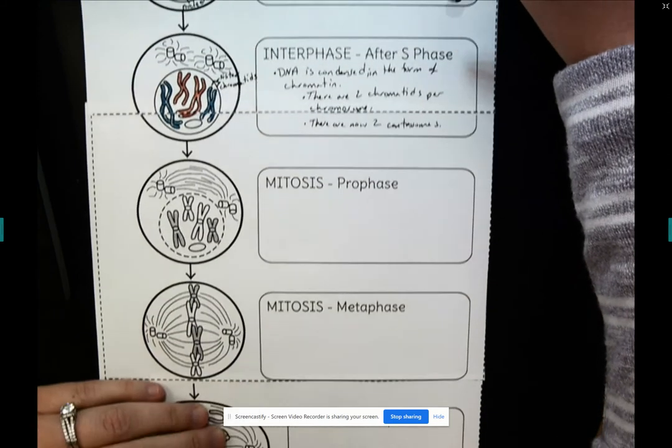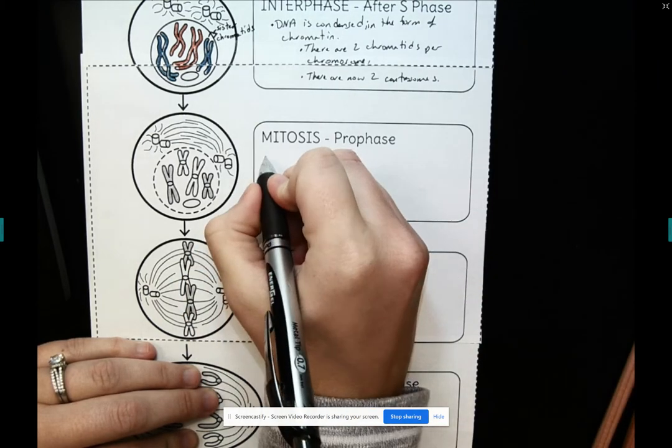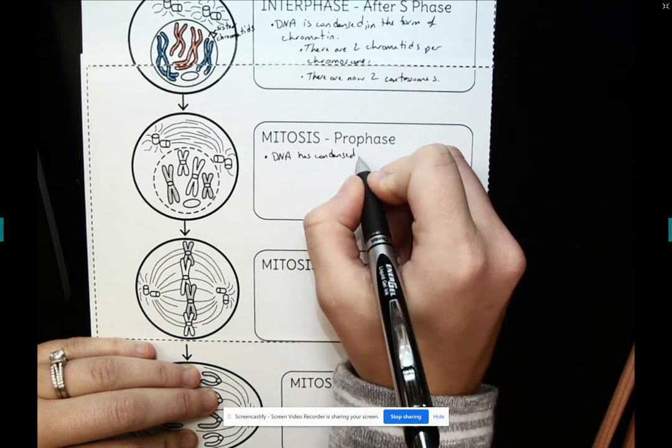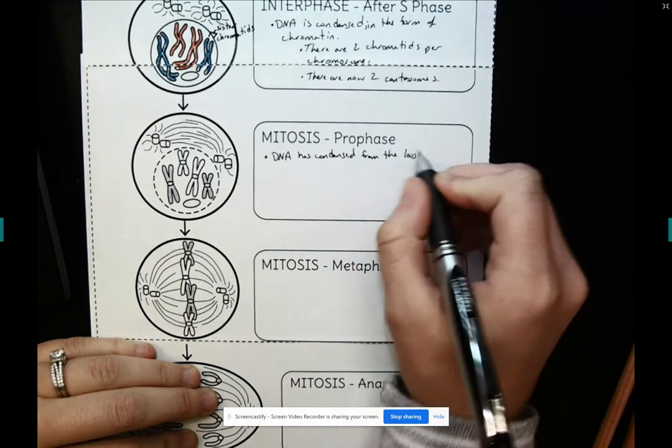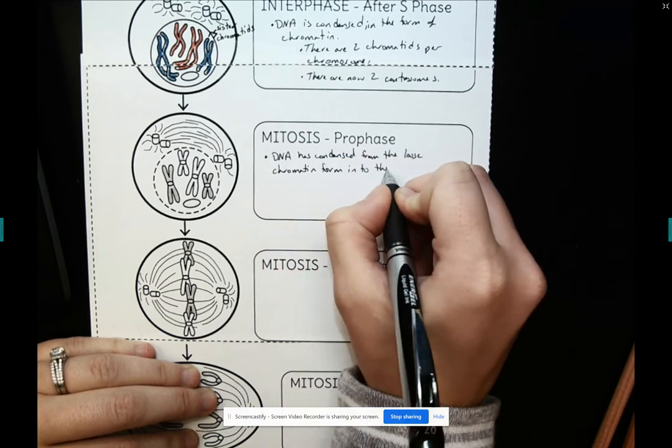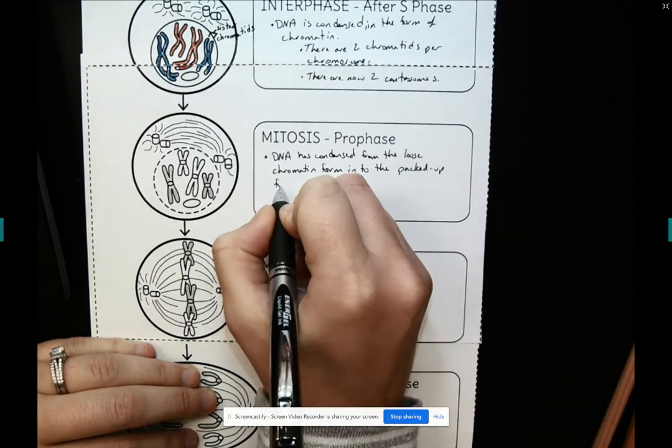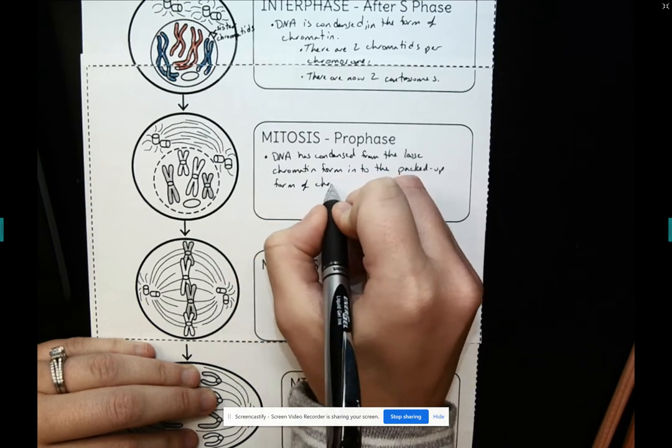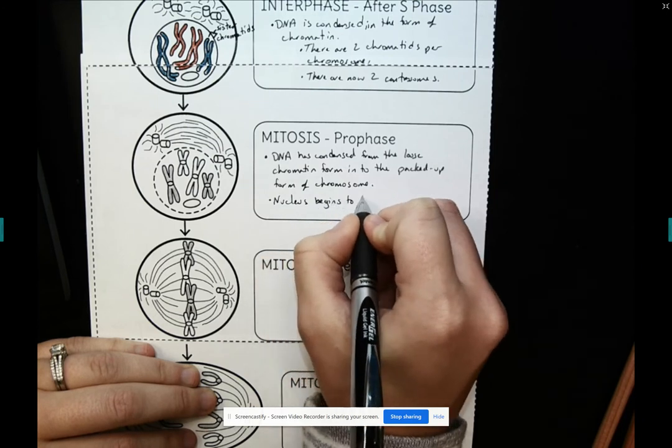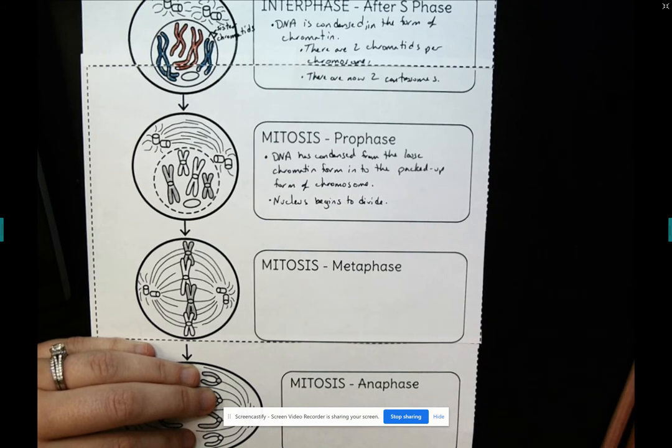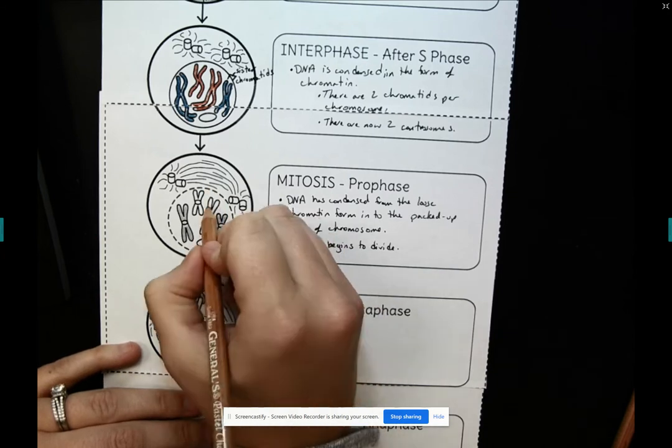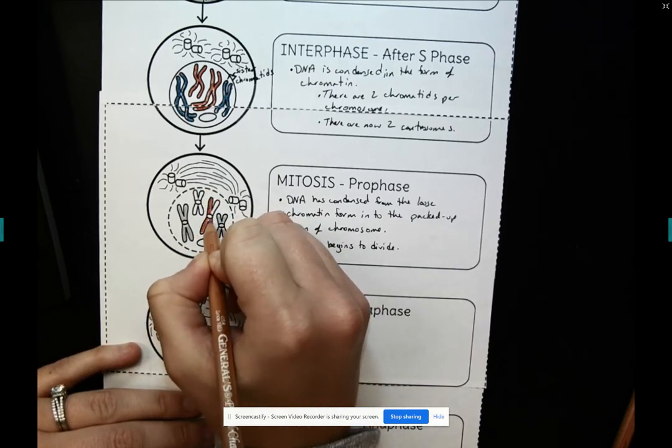So now we're leaving interphase. We're headed into cell division, mitosis. So starting with prophase, DNA has condensed from the loose chromatin form into the packaged or packed-up form of a chromosome. And the nucleus begins to divide. So before, our chromosomes, they're all wiggly, just kind of crossing. They were wiggly. I think that's a good term for it.